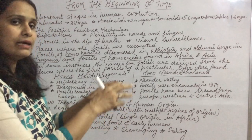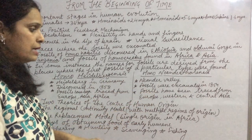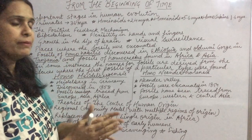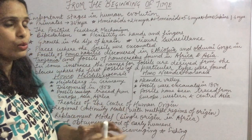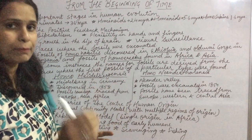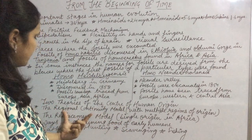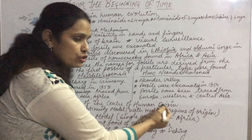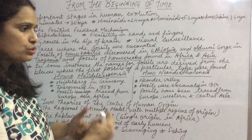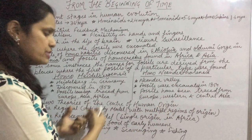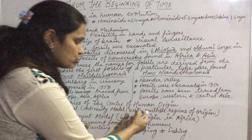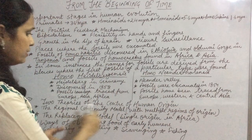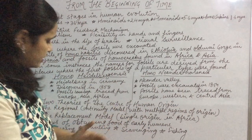According to the regional continuity model, human beings originated in different places around the world. That is why we see differences — some people have dark skin, some have light skin, some are shorter in height, some are taller. This model argues that early human beings originated in different parts of the world, not from one single place.